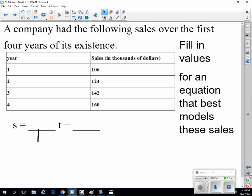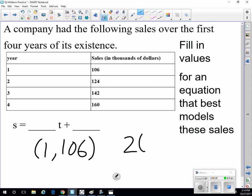A company had the following sales over the first four years of its existence. We could think of those as coordinate points, like year one and 106 would be the sales, and we could have another one that says year two would have 124 was the sales.